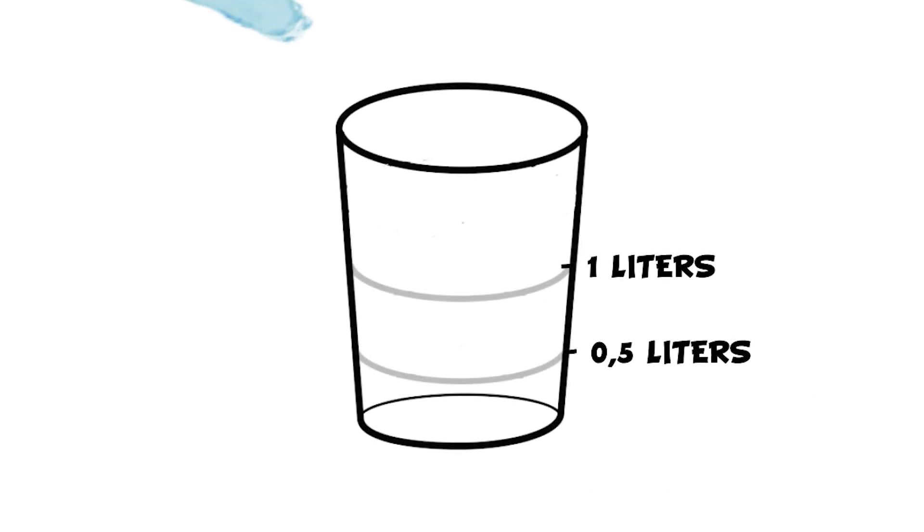To calculate the volume of an object, for example, that of a stone, we must first fill a measuring jug with exactly a litre of water, just as we are seeing in this image.